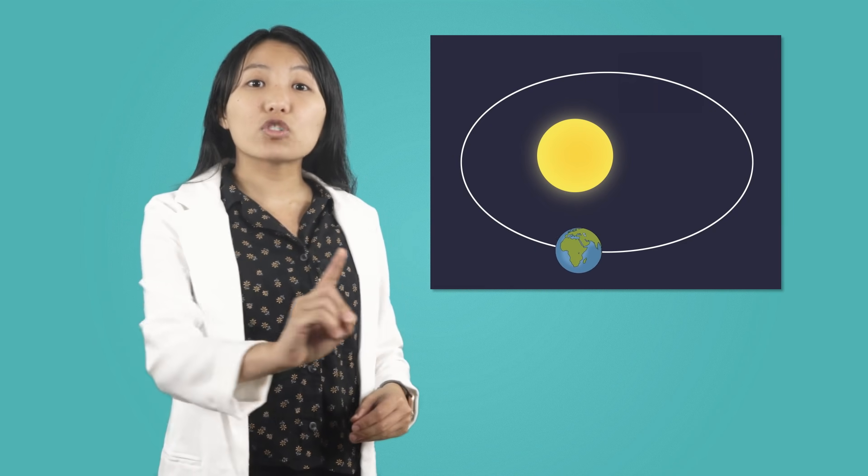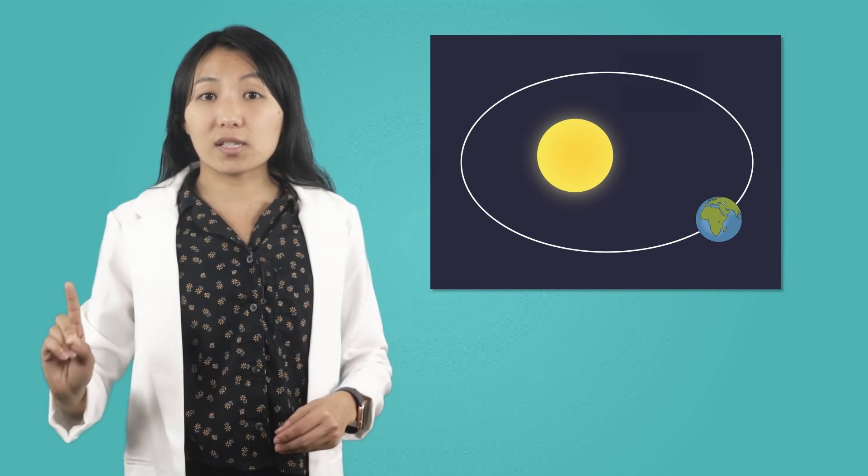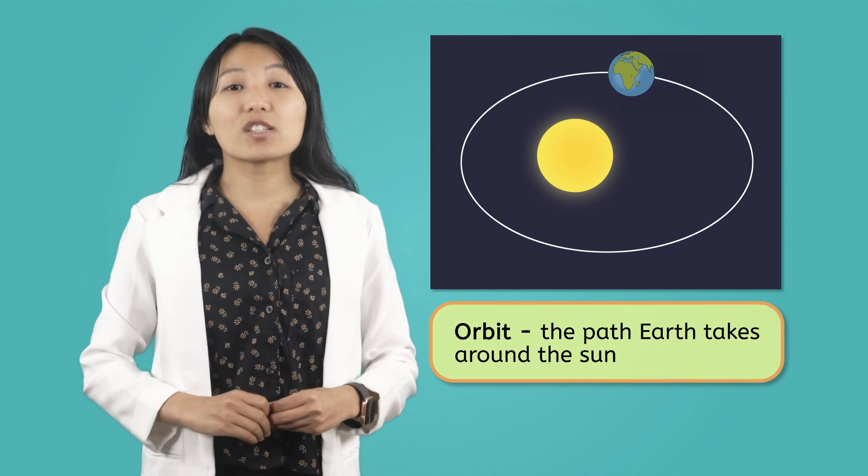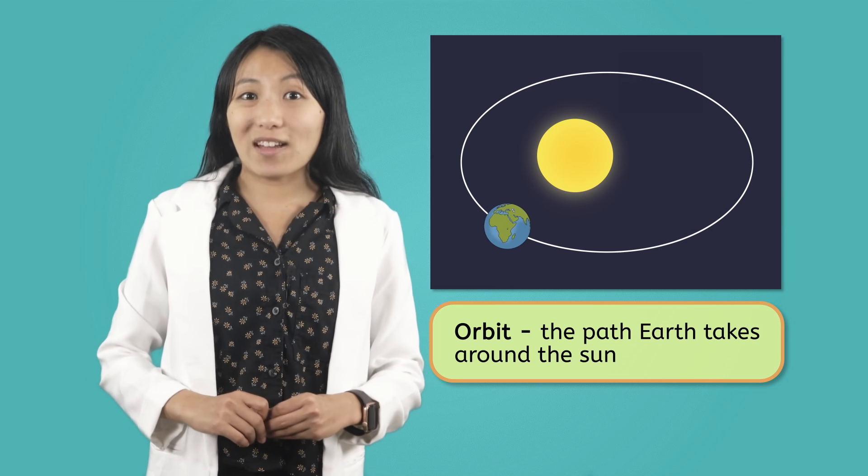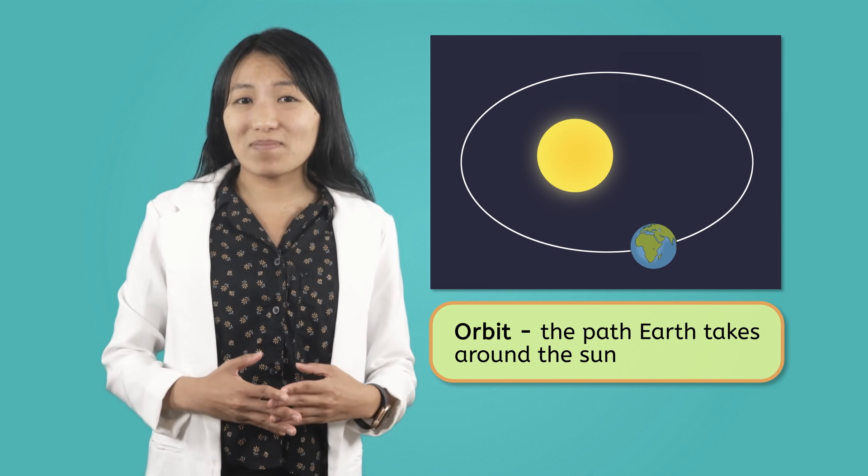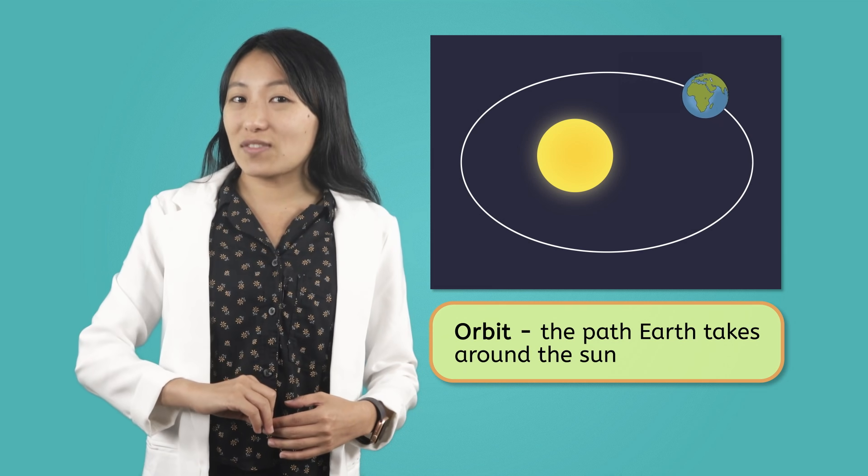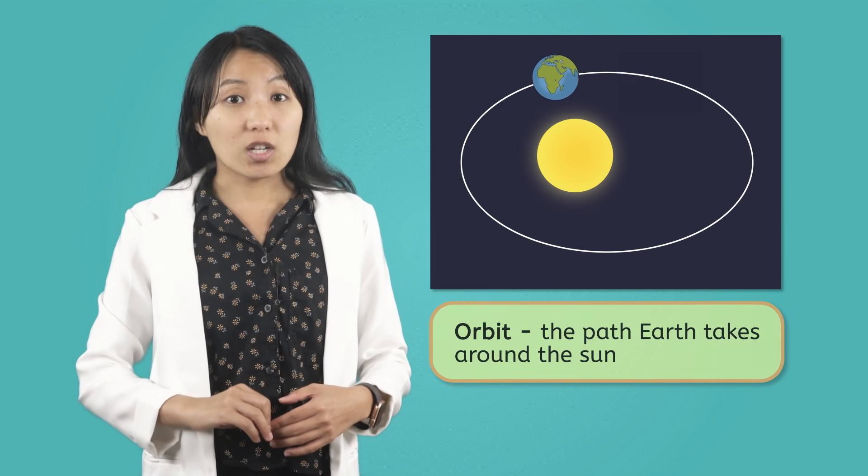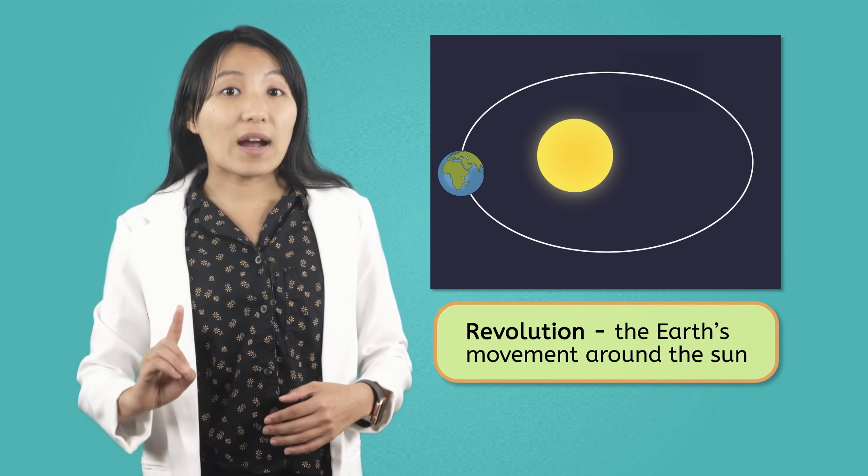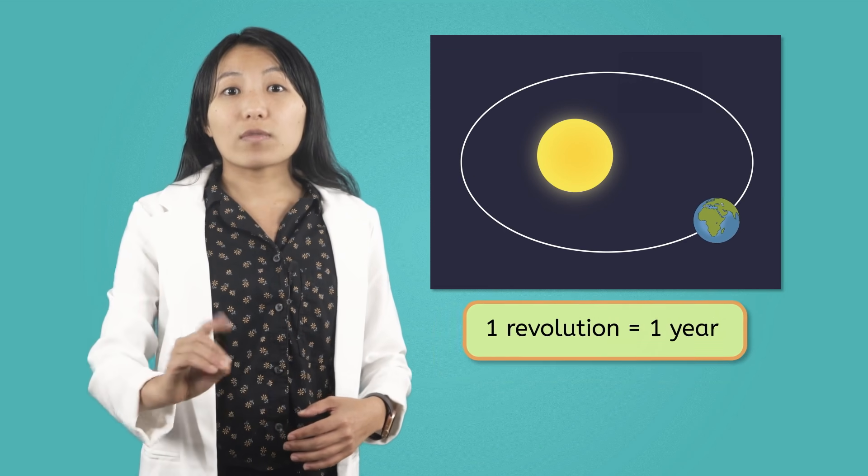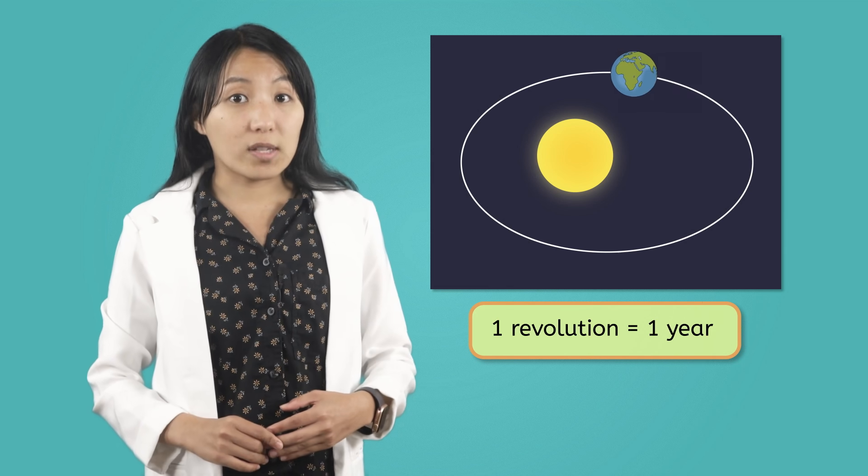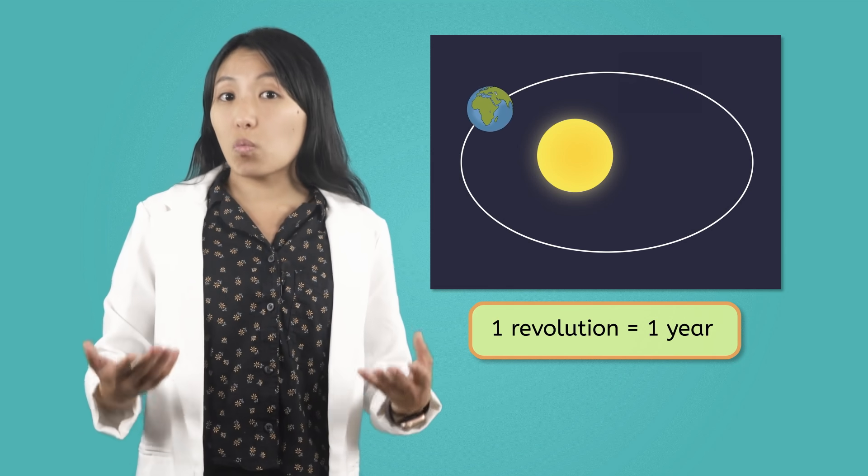Earth is constantly moving in space. It is moving in an oval-shaped path around the Sun. This path is called its orbit. Earth's path, or orbit, around the Sun takes a long time, specifically 365 days, which is one year. When Earth completes its orbit around the Sun, it has made one revolution. So, one revolution, or the amount of time it takes Earth to orbit once around the Sun, equals one year.